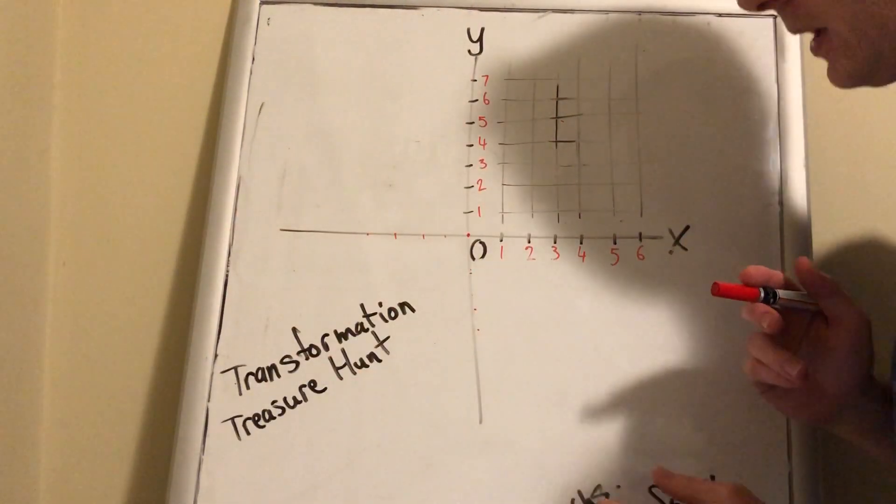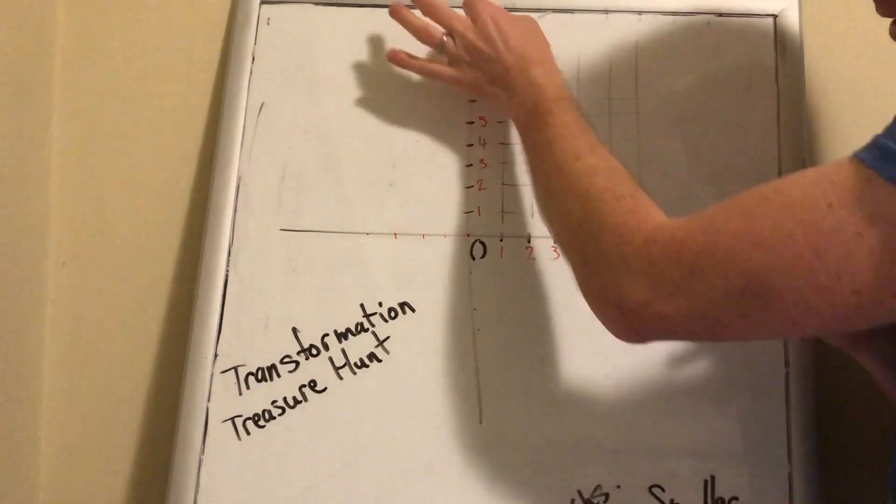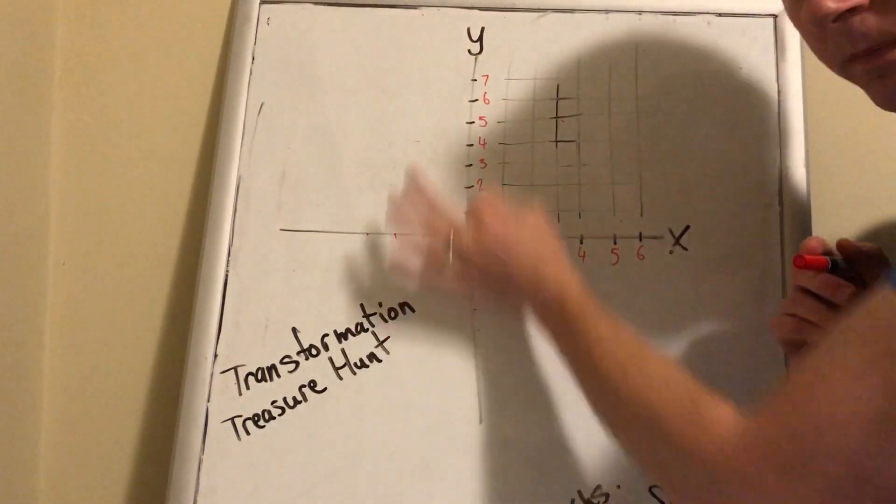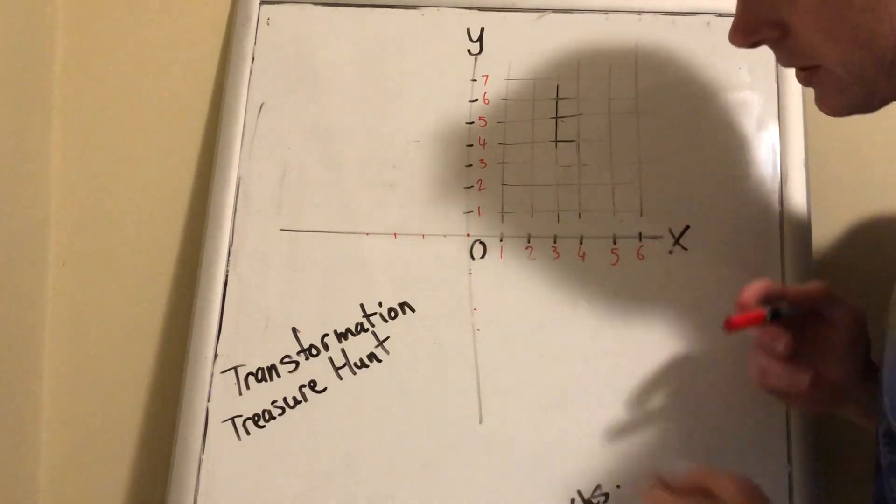This is the Cartesian plane here. You'll notice it's got a zero in the middle, a y and an x. That's the y-axis here, this line, and the x-axis here. They cross at the zero point.